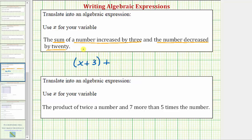Because we have a sum, we have plus the second addend, which is 'the number decreased by twenty.' We can also read that as x decreased by twenty, which would be x minus twenty. This gives us the full expression for the statement: the sum of a number increased by three and the number decreased by twenty.